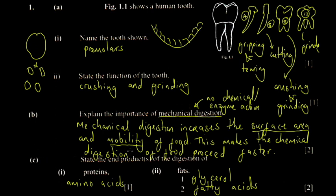On part c, you're asked to state the products of digestion of the following nutrients. For protein, one common enzyme is trypsin — trypsin acts on protein to produce amino acids. For fats, the products are glycerol and fatty acids.